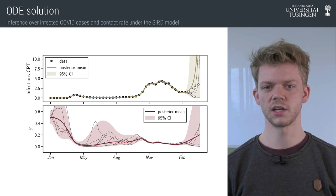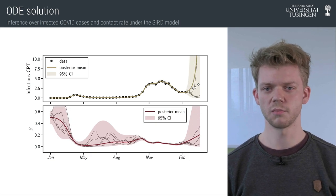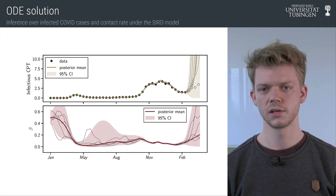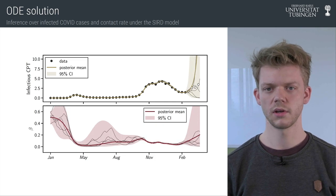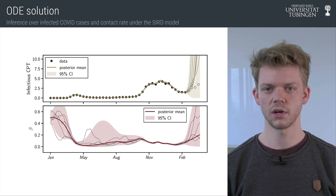On the bottom you see the contact rate that led to this outcome. Remember this is also a random process which you can sample from. The uncertainty is increased where case counts are low and wherever there is more information available the posterior contracts.